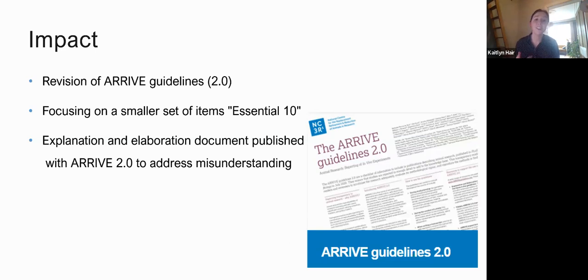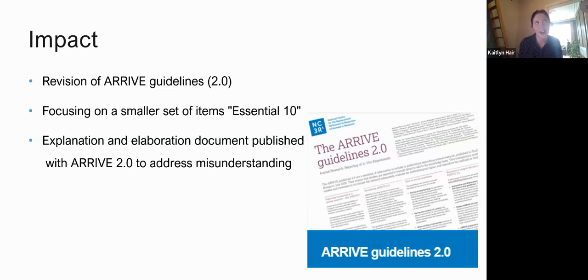Taking on board our findings — that there was confusion around some items — the updated ARRIVE 2.0 guidelines published a detailed explanation and elaboration document with lots of examples to address misunderstanding and make it easier for authors to understand what's required. They've also focused on a smaller subset: ARRIVE Essential 10, a condensed list. The idea going forward is to get authors to improve on this essential 10 first, and then broaden from there.